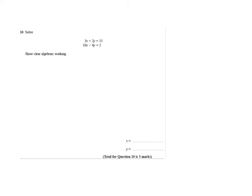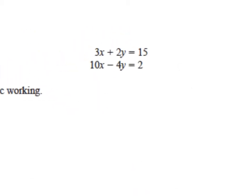A question asks me to solve simultaneous equations. These are rather nice simultaneous equations because I have plus 2y and minus 4y, so I'm going to try to eliminate the y. I can eliminate the y by multiplying all terms of the first equation by 2.